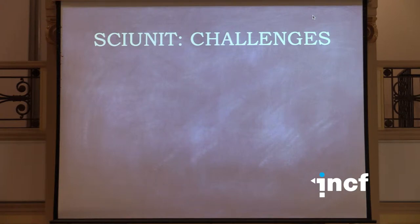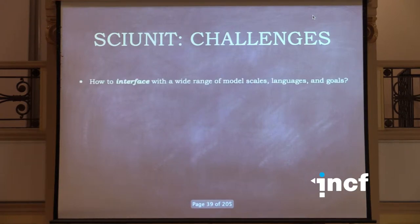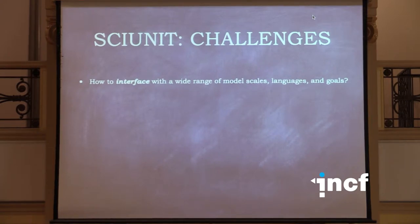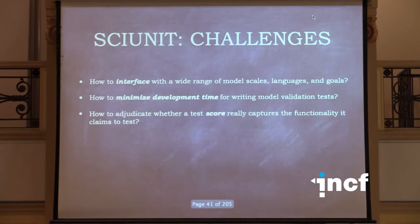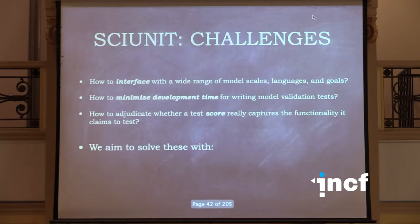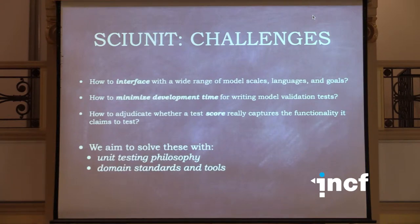So what are the challenges? This is really hard because there's a very wide range of model scales, languages, and goals. Development time is a concern — you don't want to spend years writing a big suite of unit tests every time you make a model. And how do you know whether the test you're writing is fair? What if someone disagrees and says we should really be testing it differently? We have three basic approaches: unit testing philosophy, domain standards, and collaborative development — and I think those can solve all of these.